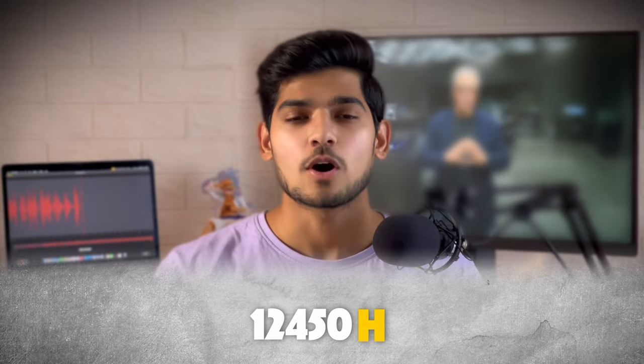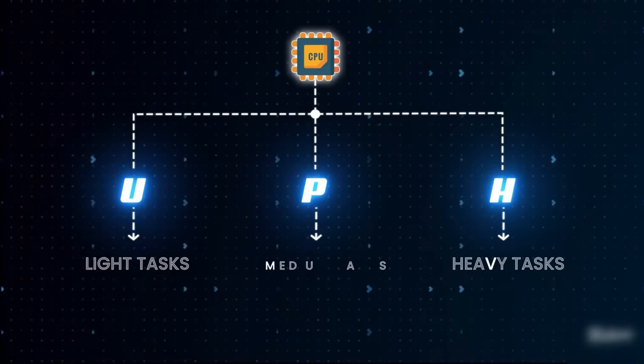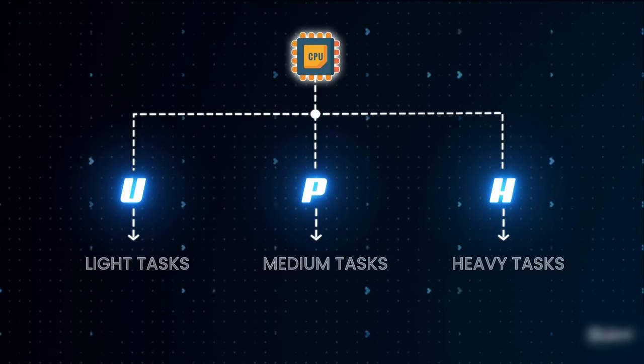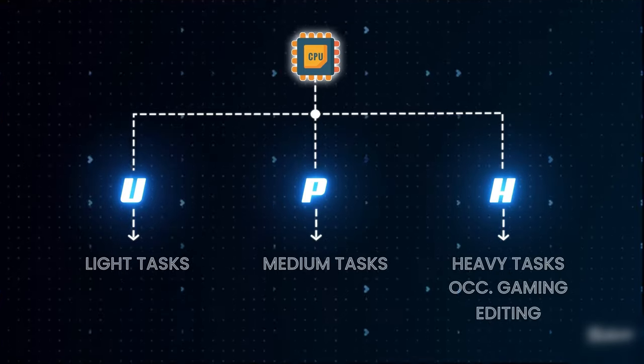In the processor, you will have options like i5, Ryzen 5, i3, and i7. But the last letter of the processor number is the most important. We have three types: U, P, and H — with H being the highest performance. I will cover all the laptops in the H series here, so we get the most high performance. Never go with P or U when you are doing video editing. I recommend you always go with the H letter.